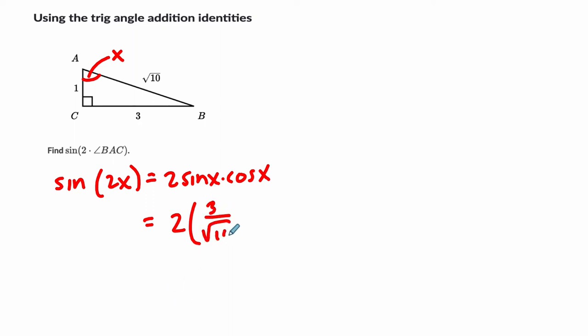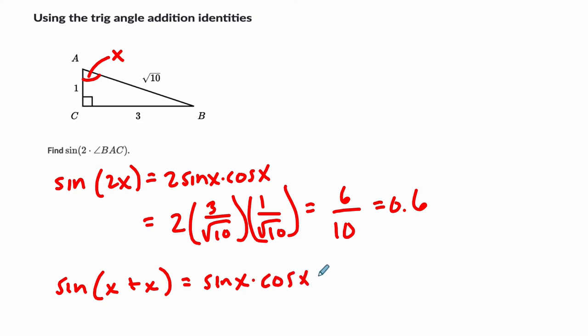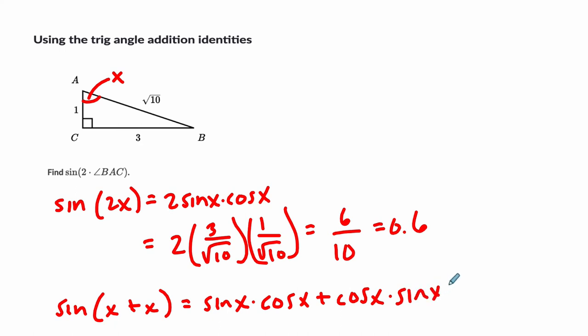And the cosine is adjacent 1 over radical 10. And what are we going to get? 2 times 3 times 1 is 6. Over radical 10 times radical 10 is 10, and that's just 0.6. You could also find the sine of x plus x, which equals the sine of x times the cosine of x plus the cosine of x times the sine of x, and you will get the same thing. You just find the sines and cosines at this angle here and reduce it.